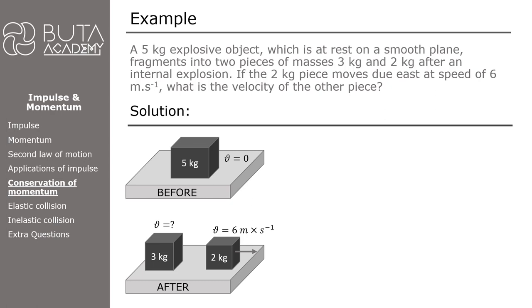First, we type the formula: total initial linear momentum is equal to the total final linear momentum. Then, we decide on positive and negative directions. For this question, we choose east as positive.